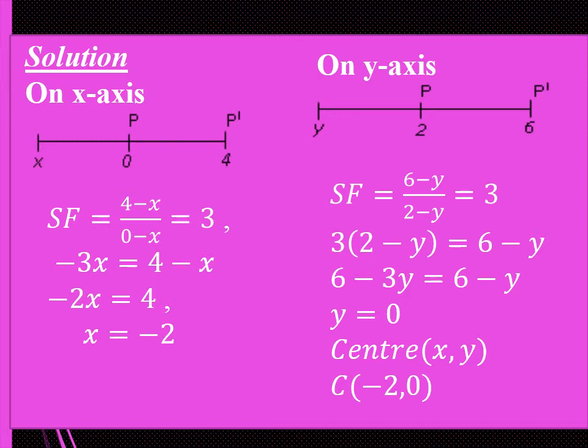Negative 2x is equal to 4, so x is equal to negative 2. Then on the y-axis, point P moves from 2 to 6. The scale factor of enlargement is (6 minus y) over (2 minus y), and that gives us 3. From this, we get 3 times (2 minus y) equals 6 minus y, which gives 6 minus 3y equals 6 minus y. When we solve this, we get y equals 0. So the center of enlargement (x, y) is (negative 2, 0).